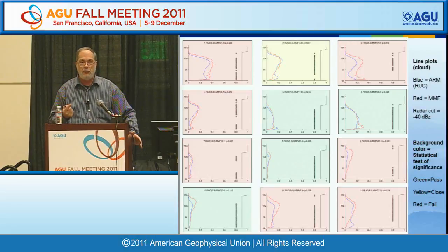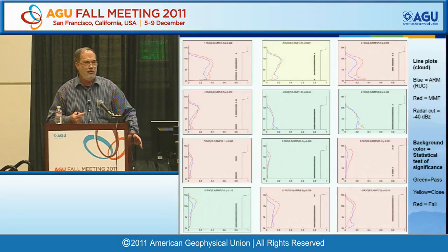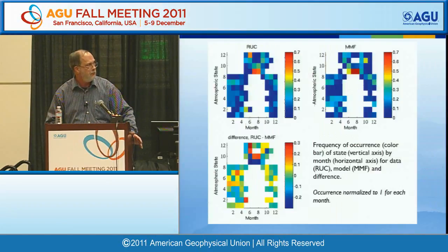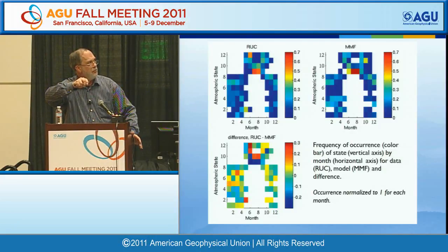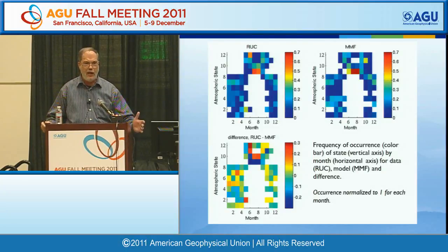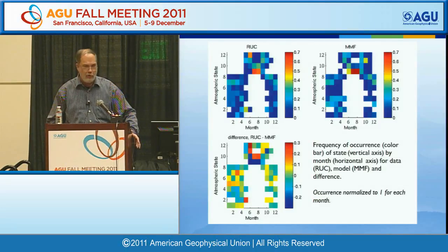The yellow is on the margin of being statistically differentiable, and the red ones are statistically different — the model is not doing a good job. One interesting result was that the model was doing a good job when cold fronts went by, but it was doing a poor job when warm fronts went by — it's overactive. We can also ask for cloud occurrence by month: the states capture the difference between summer and winter, but the frequency of occurrence of the states differs between the model and observations, and we're still working to understand why.